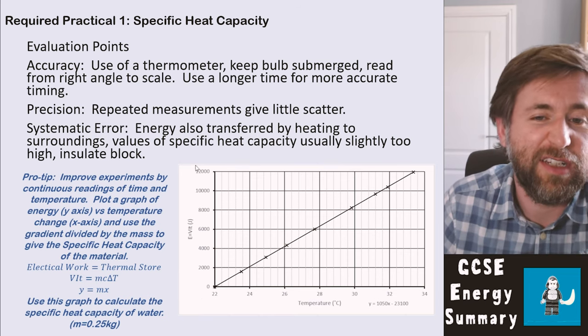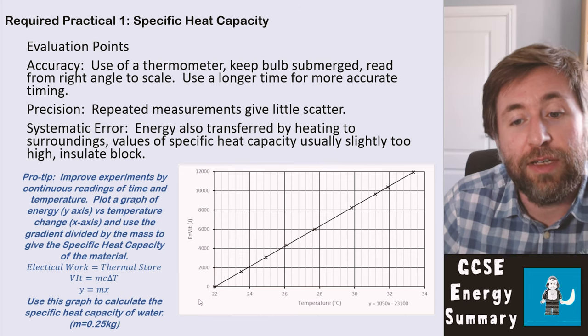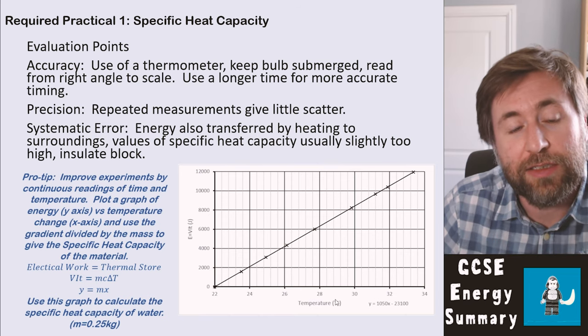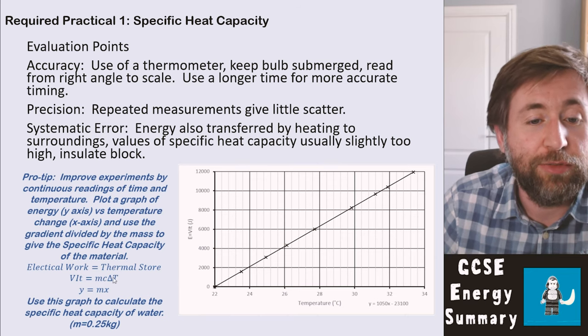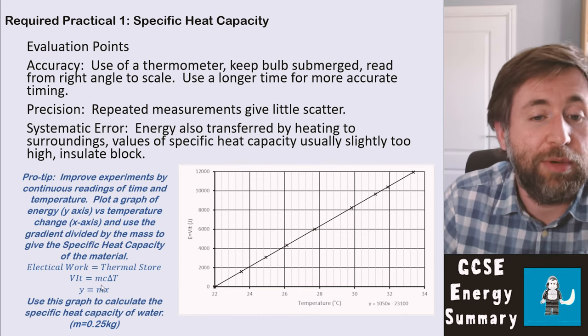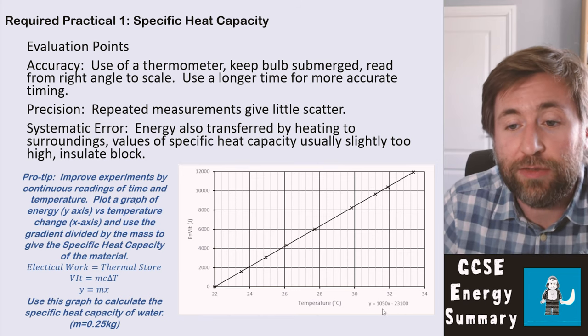This is our change in energy here on the y-axis and our temperature on the x-axis. Now the gradient of that will actually be MC, which will be the mass multiplied by the specific heat capacity. So the gradient of this graph.